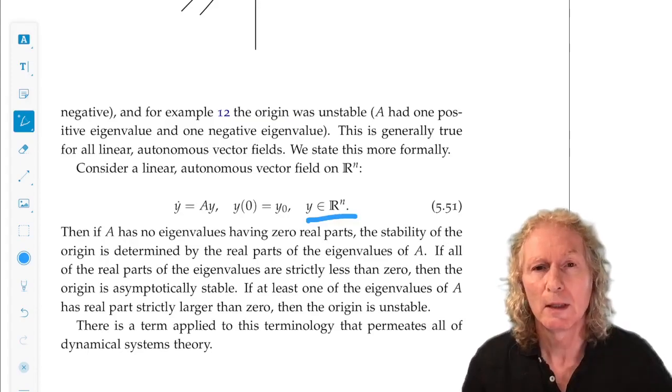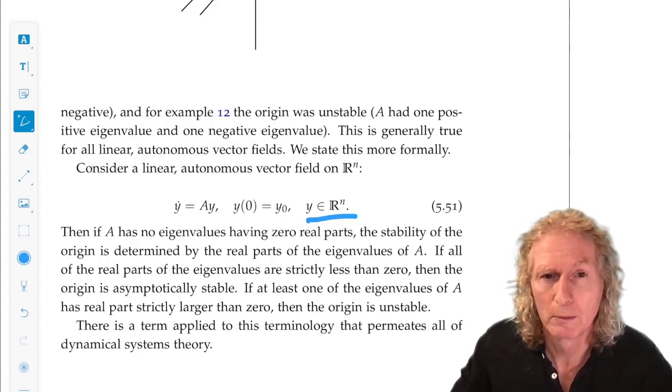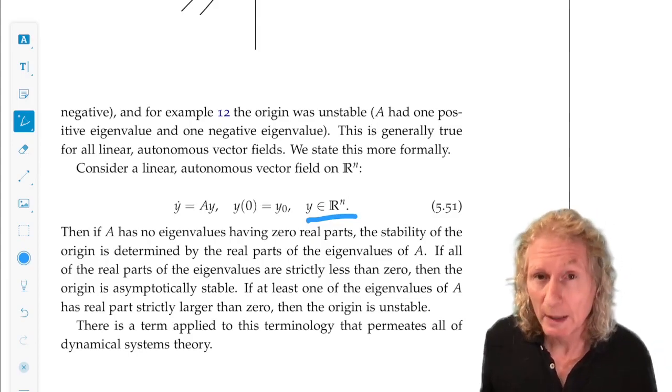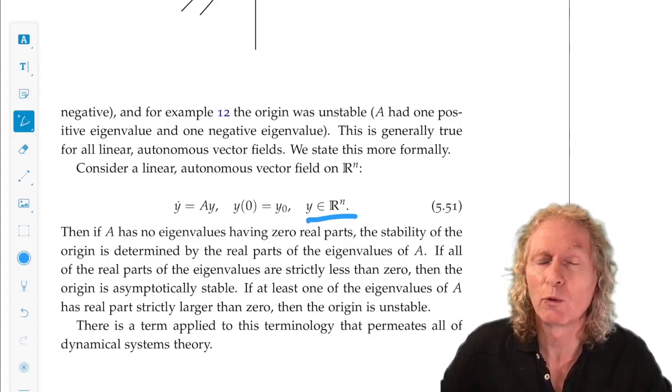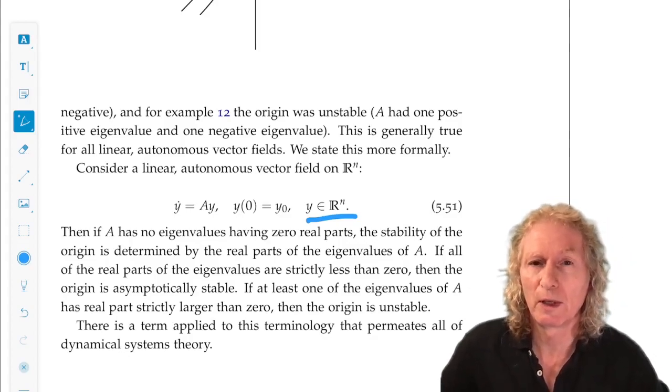If none of the eigenvalues have zero real part, then they determine the nature of the stability. If they're all negative real part, the origin is asymptotically stable. If at least one of them has positive real part, the origin is unstable.